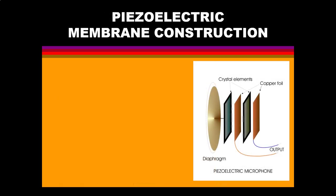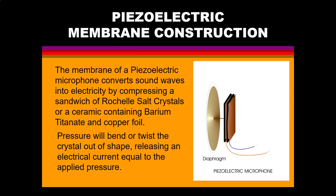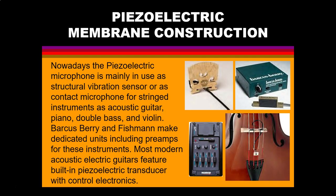The second type is the piezoelectric microphone, which converts sound waves into electricity by compressing a sandwich of salt crystals or ceramic containing barium titanate and copper foil. The pressure will bend or twist the crystal out of shape, releasing an electrical current equal to the applied pressure. Nowadays, piezoelectric microphones are mainly used to pick up the structural vibration of stringed instruments such as acoustic guitar, piano, double bass, or violin. Barkus Berry and Fishman make dedicated units including preamps for these instruments, and most modern acoustic-electric guitars feature a piezoelectric transducer with control electronics built into the guitar.